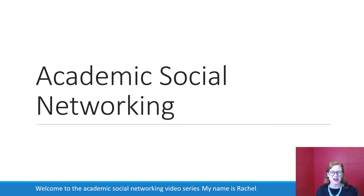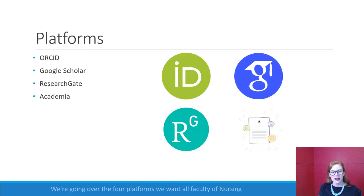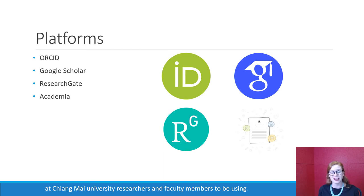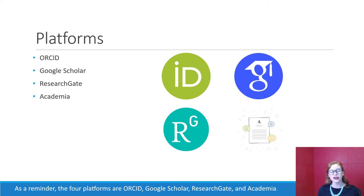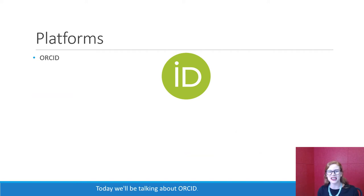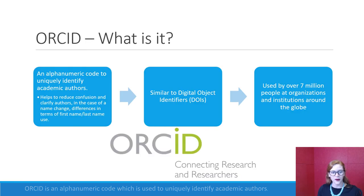Welcome to the academic social networking video series. My name is Rachel. We're going over the four platforms we want all faculty of nursing at Chiang Mai University — researchers and faculty members — to be using. As a reminder, the four platforms are ORCID, Google Scholar, ResearchGate, and Academia. Today we'll be talking about ORCID.